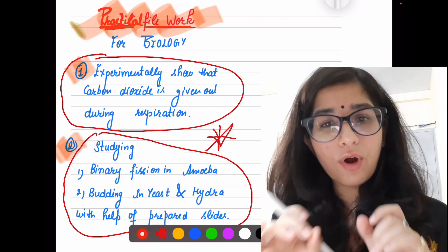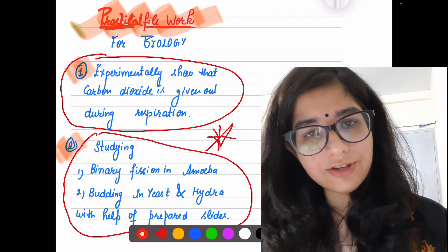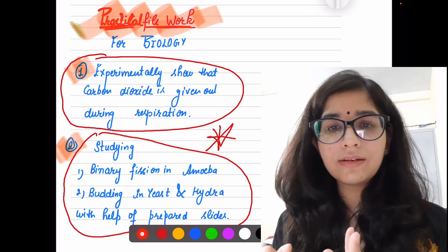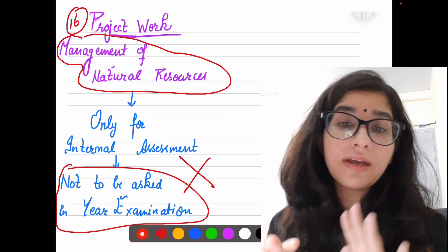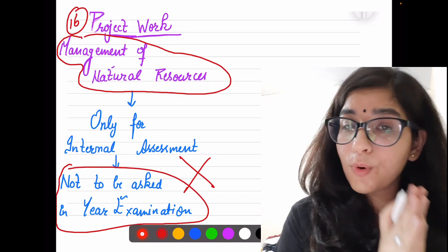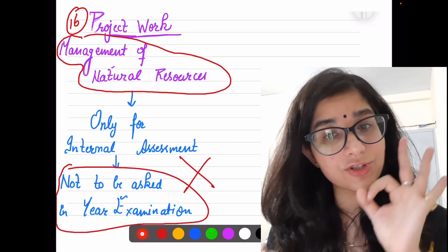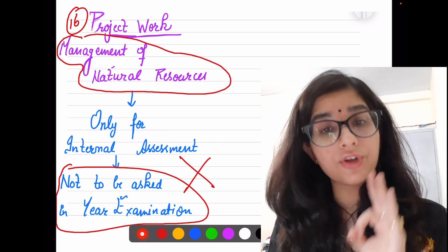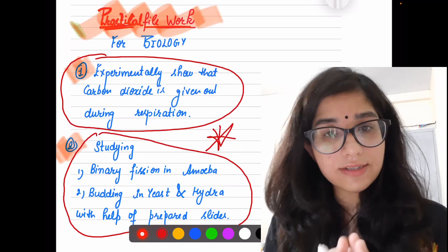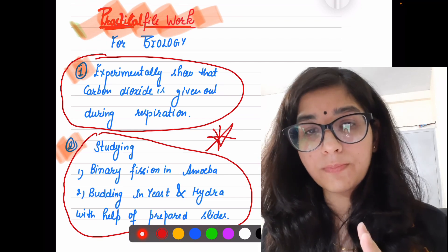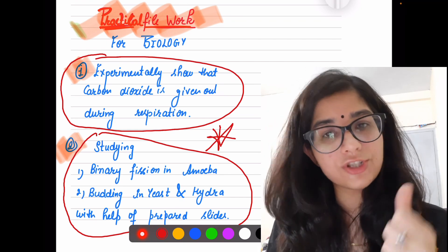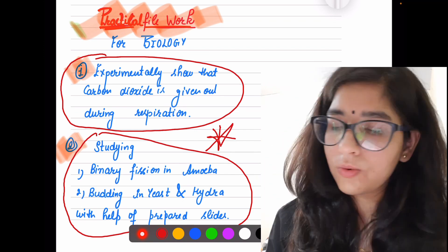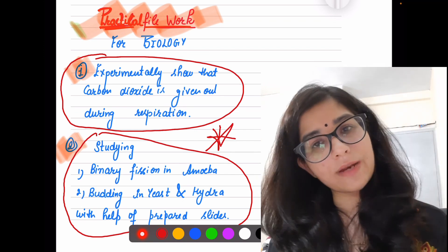To summarize the practical and project work: Project — only Management of Natural Resources topics. Practical file — only two experiments. Both project and practical file are important for your internal assessment. This chapter and practical content will not come in the board exam paper — it is only for your project work and practical file, contributing to your internal assessment marks.